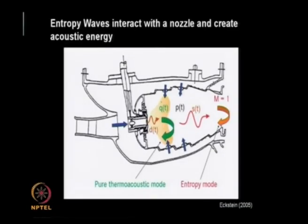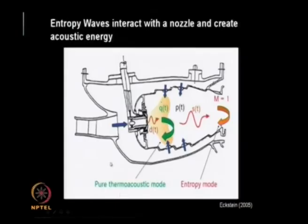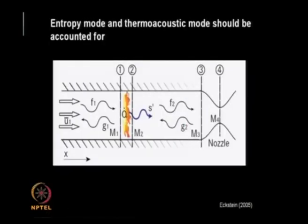Another mechanism is entropy modes. Combustion produces hot packets — entropy waves — that come into the nozzle through which flow is accelerating. These entropy waves get reflected back as pressure, creating pressure oscillations that feed back into the combustor. So in addition to the pure thermoacoustic mode, entropy modes can also drive oscillations in a thermoacoustic engine. This happens in engines where the flow is choked, and both entropy mode and thermoacoustic mode should be accounted for.